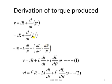Now multiply equation number 1 with current on both sides. You will get the power input equation as Vi = I²R + Li(di/dt) + I²(dL/dθ)ω, which is equation number 2.